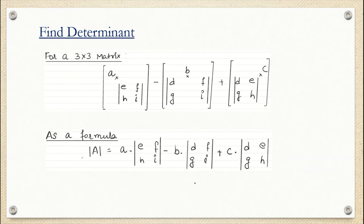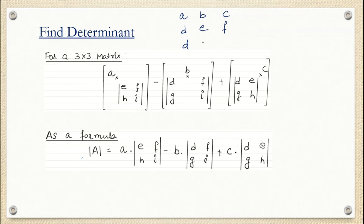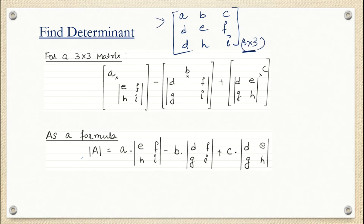Now we are going to see the determinant for a 3×3 matrix. The example of a 3×3 matrix is: elements A, B, C in the first row; D, E, F in the second row; G, H, I in the third row. This is the general form of a 3×3 matrix and we have to find its determinant.